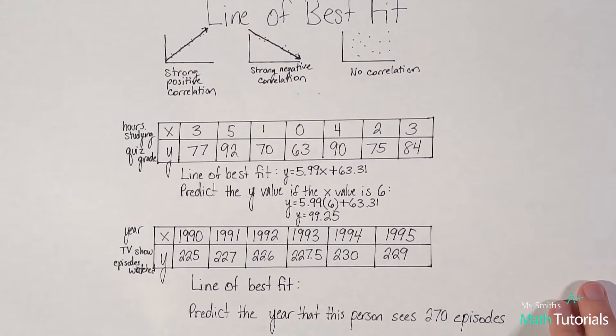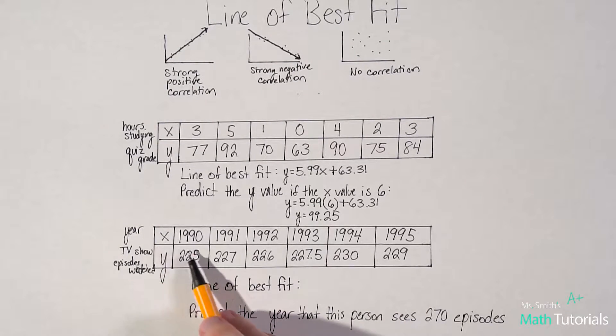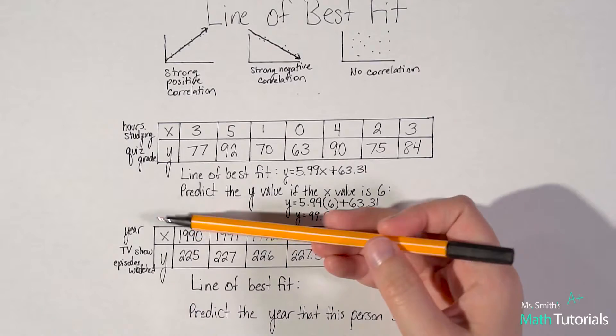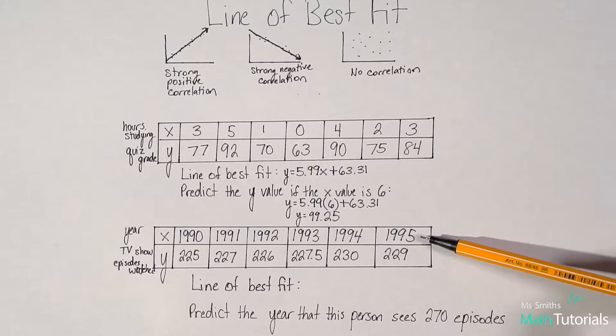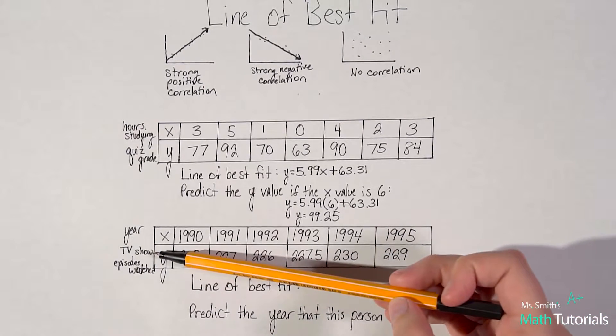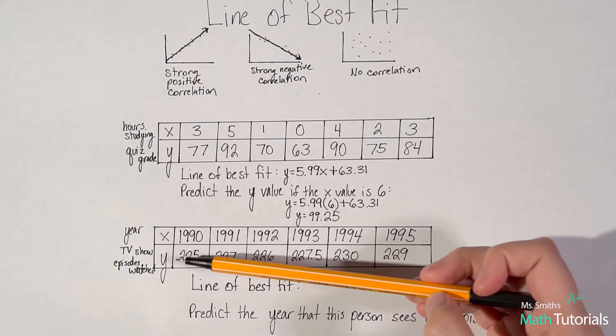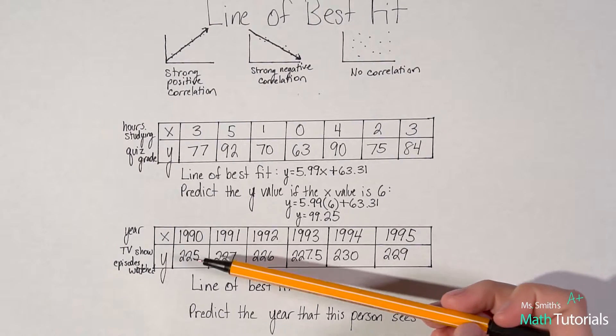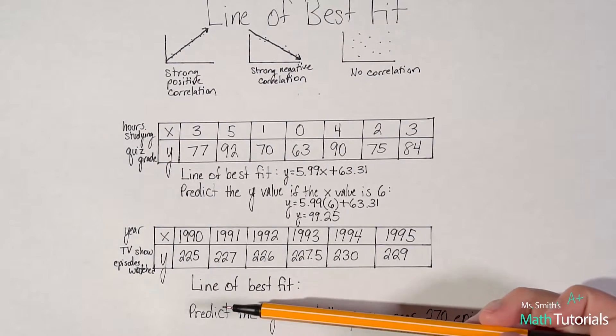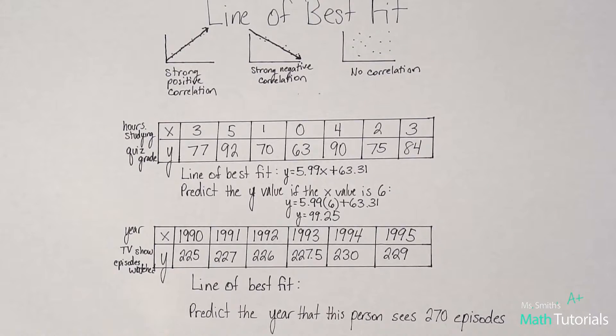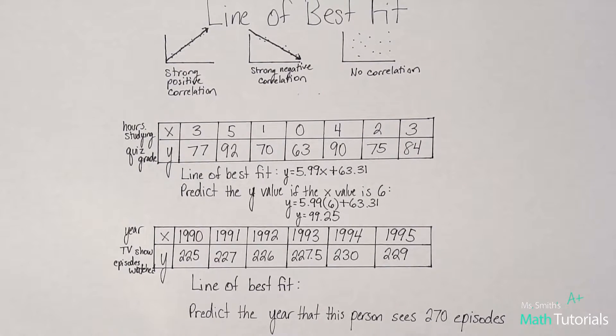Let's look at a second example down here. This one's a little different. You'll notice that it's talking about year. Our x value is year. So, it starts in 1990, 91, 92, all the way up to 1995. And then it says, the TV show episodes watched. In 1990, this person watched 225 TV episodes. In 1991, they watched 227 TV episodes. Now, it would probably be way more than that with Netflix and binge watching and all that stuff. But this is in 1990. So, this person probably watched a lot of TV for that time period.